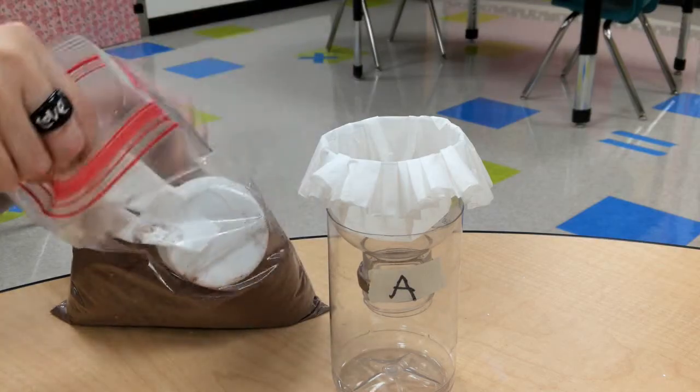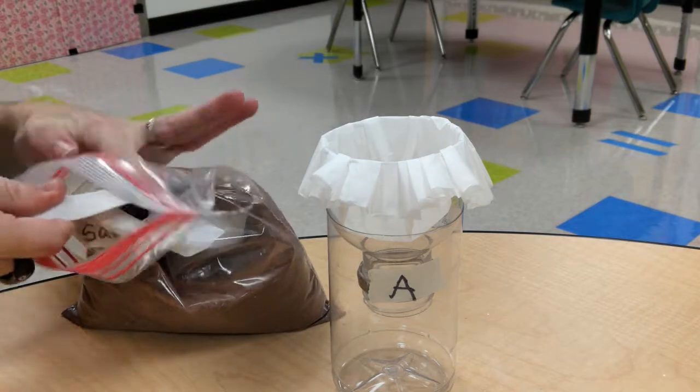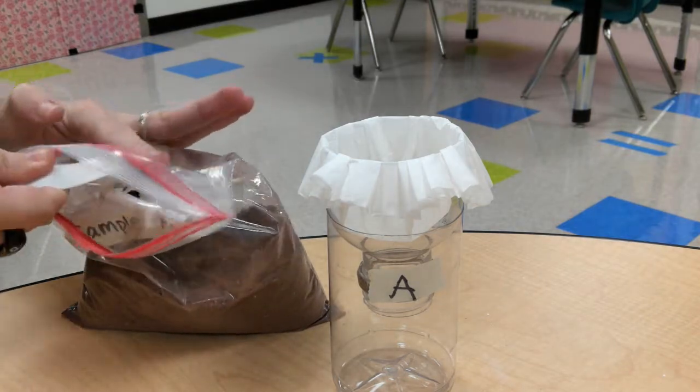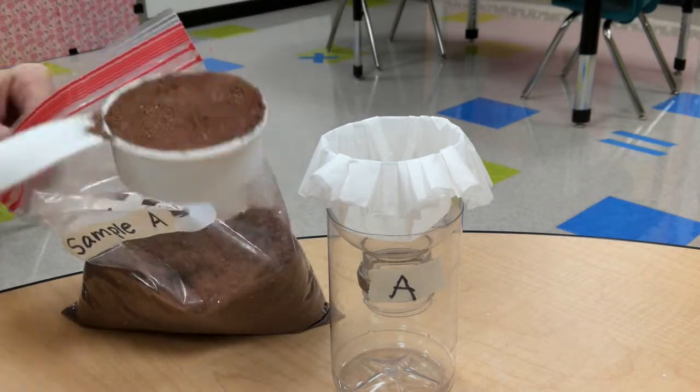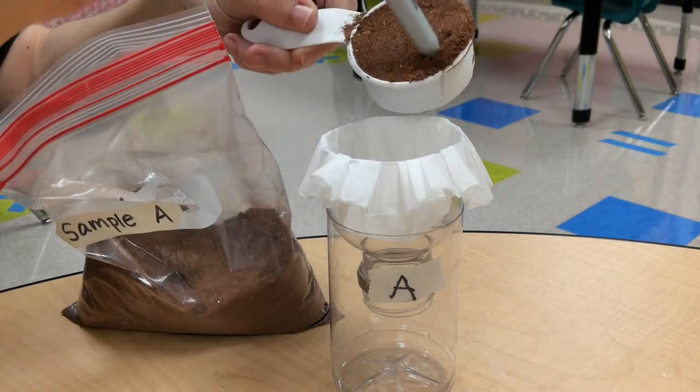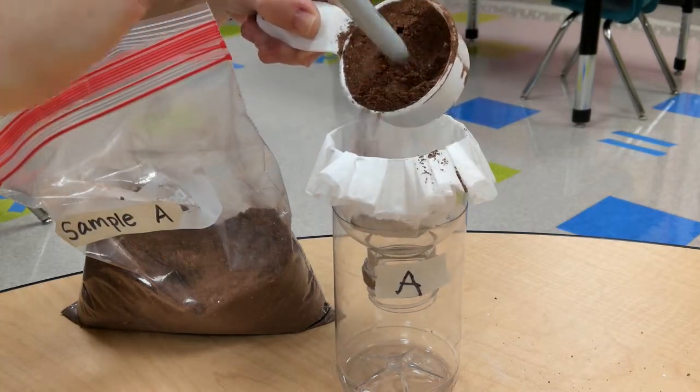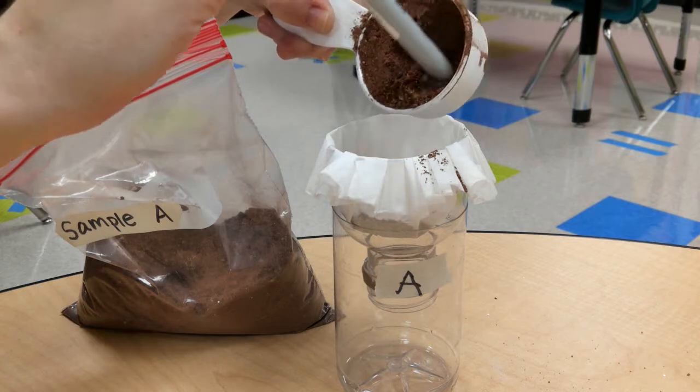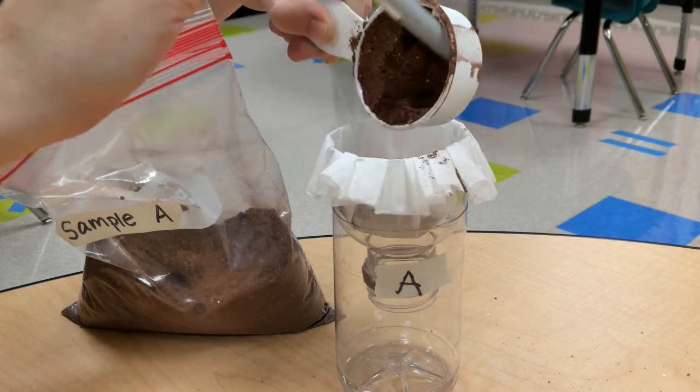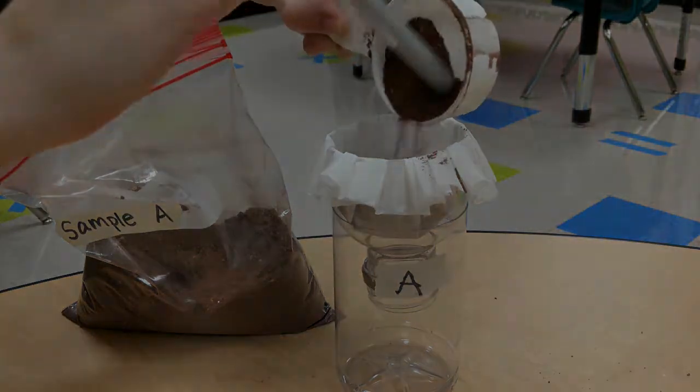Step number four, you're going to need to place a small amount of the soil sample into the funnel that's lined with a filter. Don't put too much, you don't want it to overflow and get all messy all over the place.